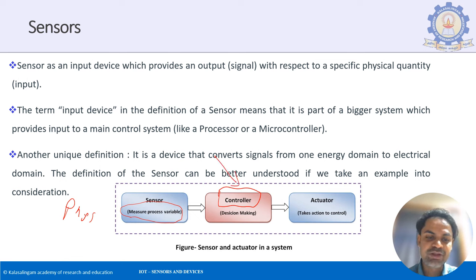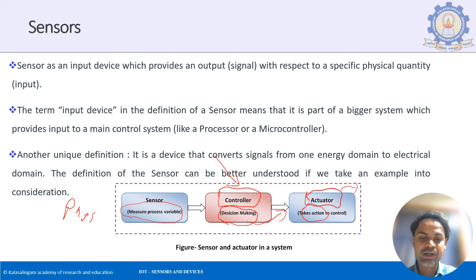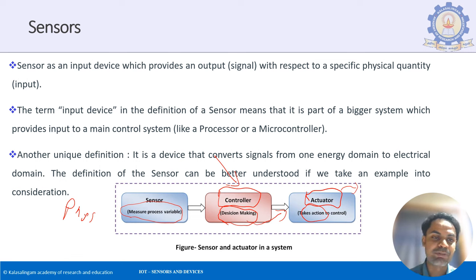After this electrical quantity is processed, you will make a decision, and based on that decision, you will decide what is to be done with that particular data. The action taken is done by the actuator. This actuator makes sure that you are taking that in the form of an output, which could be any display or motor taking care of the particular action.